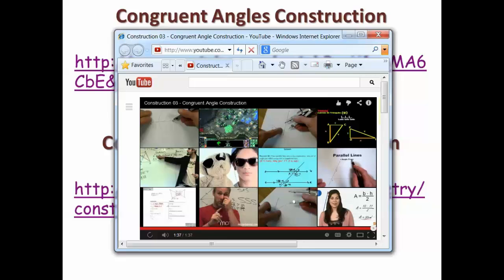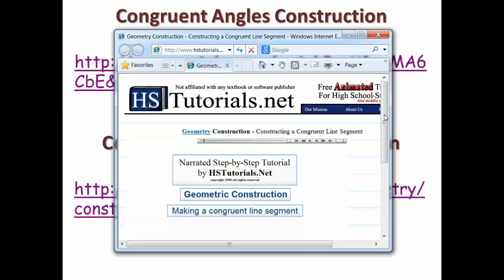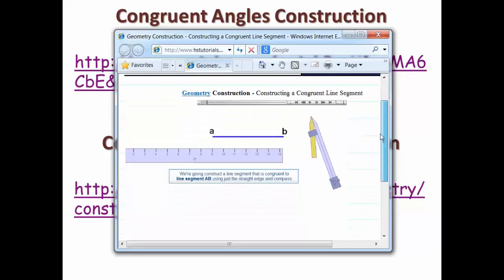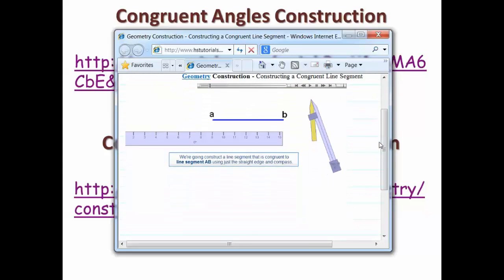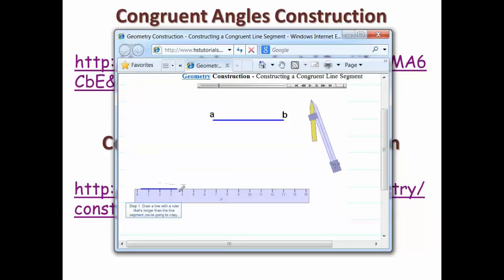Now we're going to see a video on congruent segments construction. We're going to construct a line segment that is congruent to line segment AB using just the straightedge and compass.